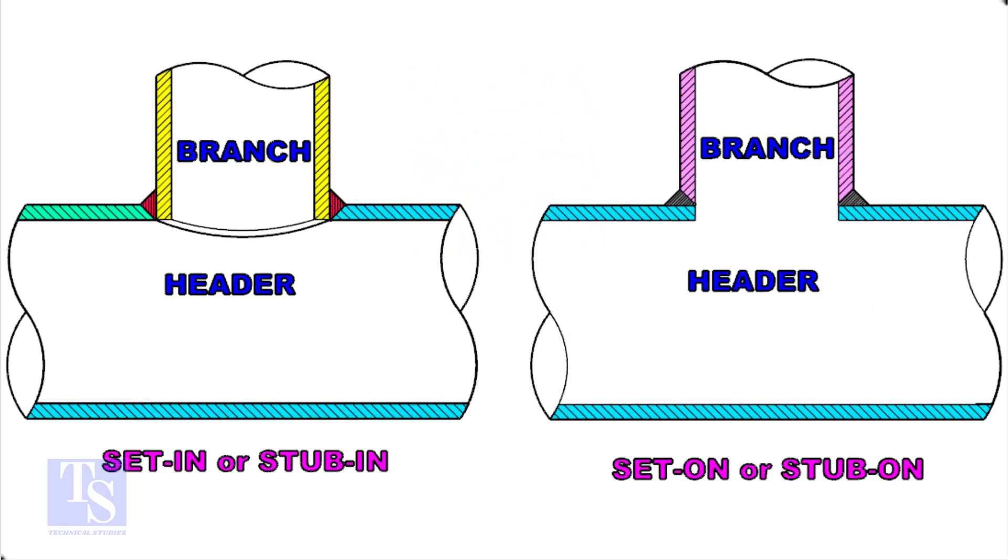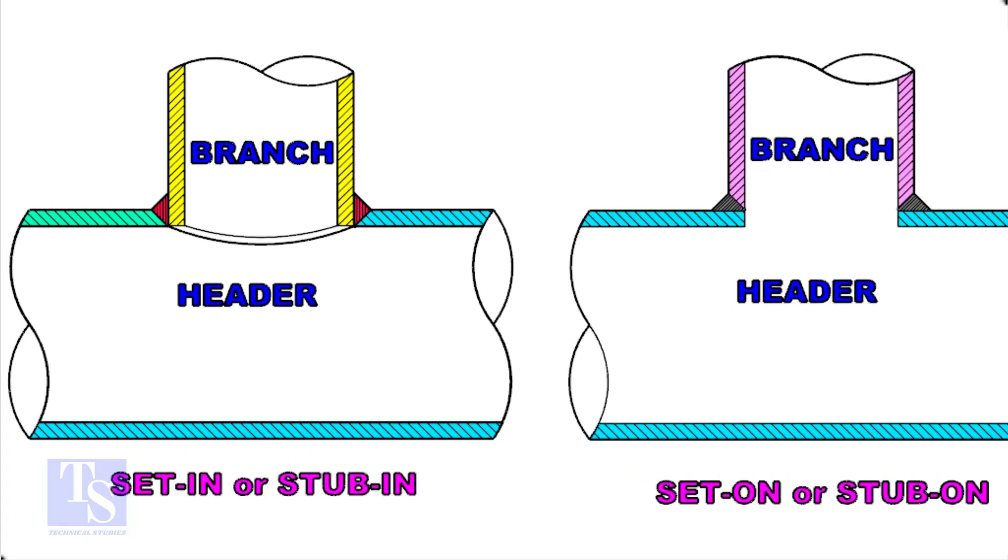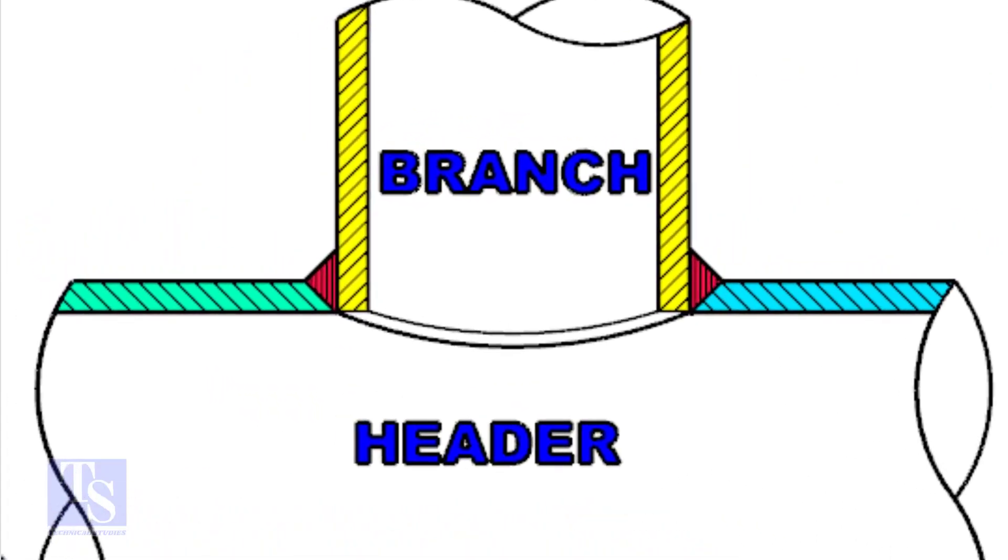Let us check the difference between a stub-in and stub-on connection. Look at the stub-in joint, the bevel is prepared on the header. And the branch pipe is in the header.